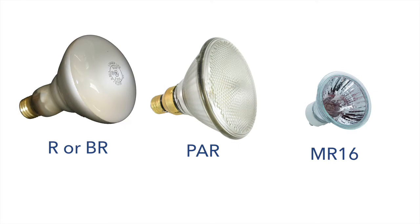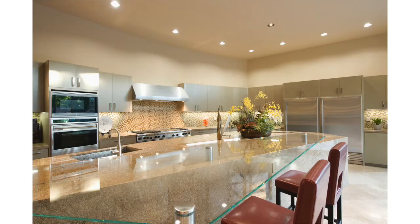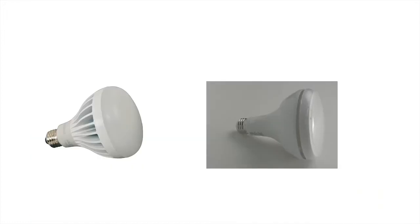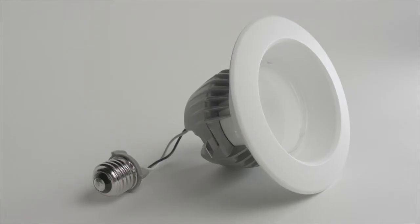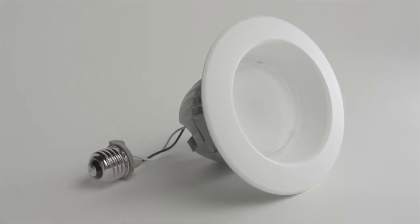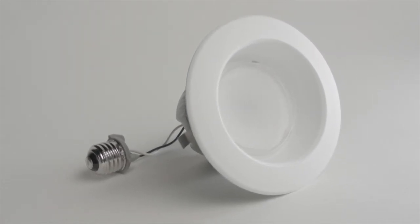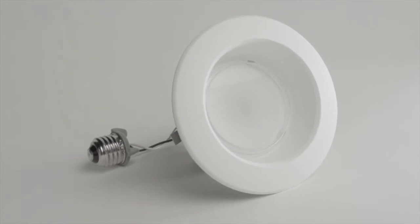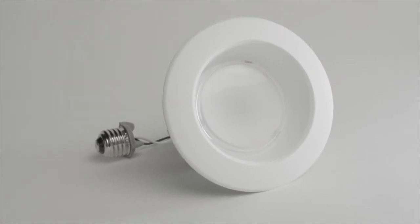The most common types of directional bulbs in the home are R or BR bulbs, PAR bulbs, and MR16s. R and BR bulbs are usually used in recessed lighting because they provide even illumination underneath. LED replacements for R and BR bulbs are sometimes called floodlights. When upgrading a bulb in a downlight, consider a downlight insert — they eliminate the space between the bulb and the housing, and some are designed to use the trim ring to move heat away from the LED, keeping it cooler.